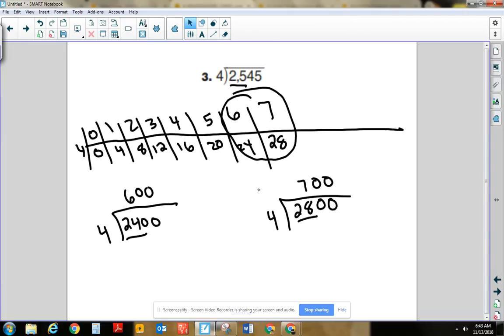Well, what is my better estimate here? Well, 25 is in the hundreds place. That's really close to the 2400. So this right here, 600 is my better estimate. It's definitely closer.